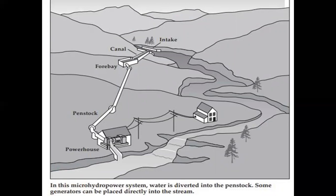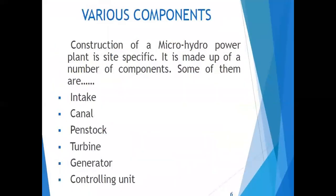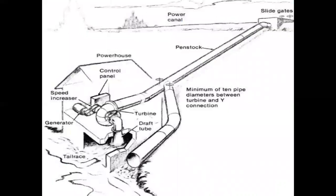The controlling unit is inside the power house. For exam purposes, you can draw a rough outline showing the major parts: reservoir, penstock, control panel, and generator — just draw blocks, name them, and mark the parts.